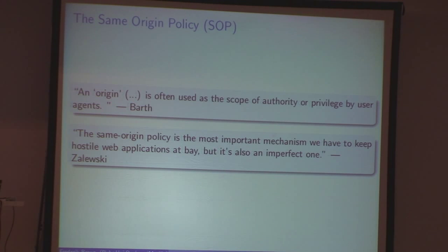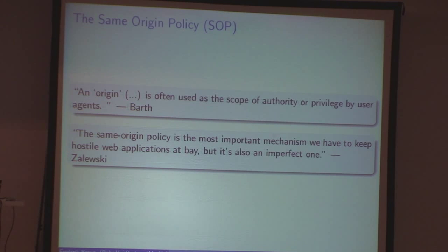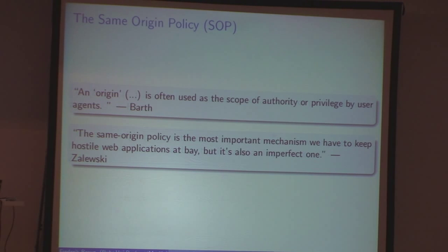Adam Barth, who wrote the RFC 15 years after the fact that browsers had the same origin policy, said it is used as a scope of authority or privilege by user agents. Michael Zalewski said in The Tangled Web that it is the most important mechanism we have to keep hostile web applications at bay, but it's also an imperfect one. We're going to talk about how much of an imperfect security mechanism it is.